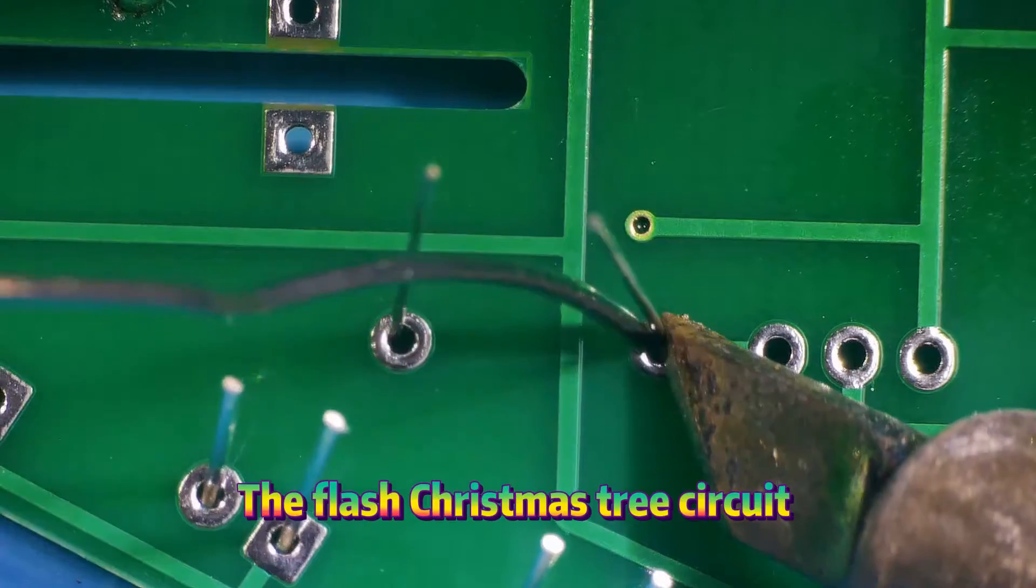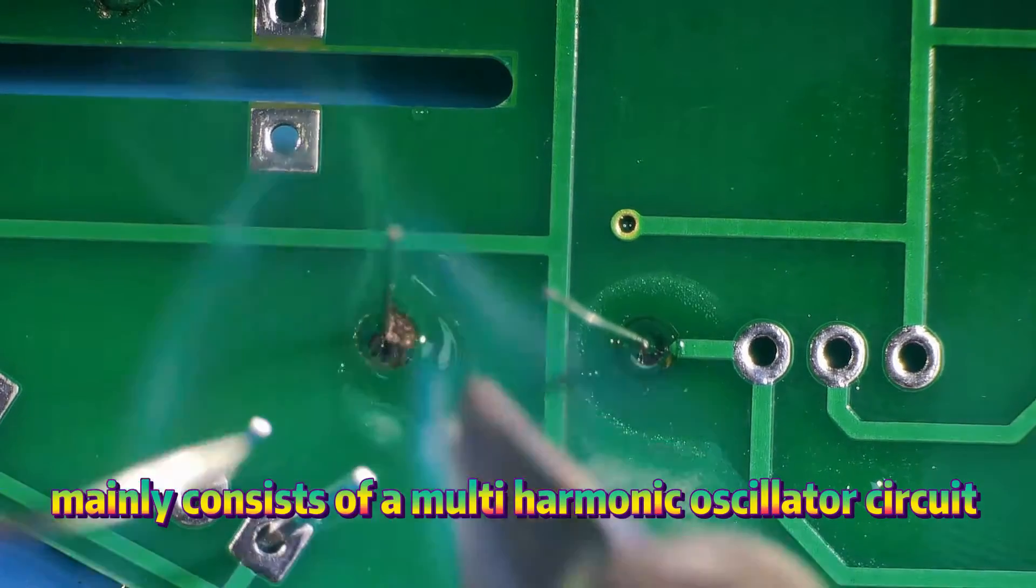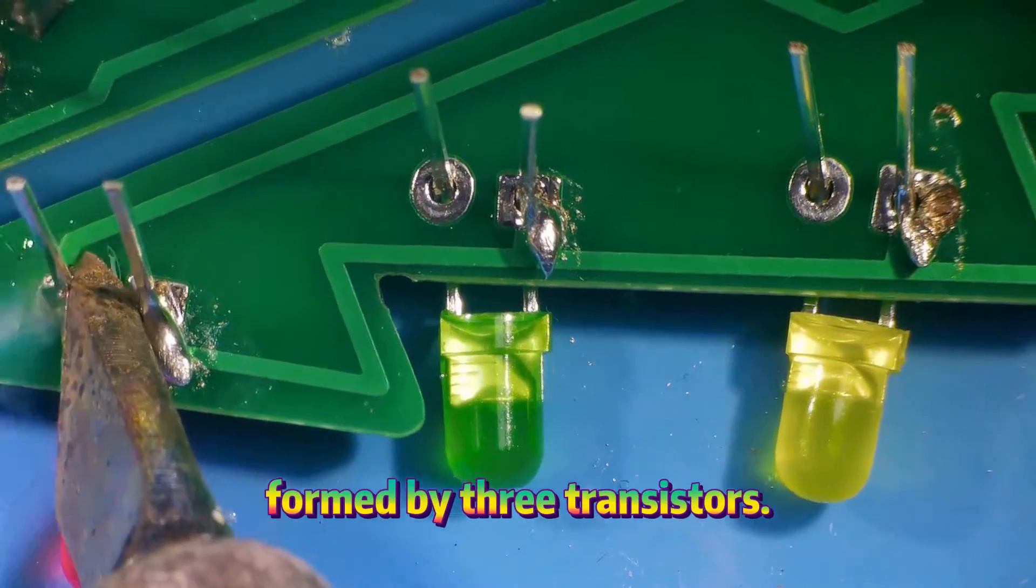The flashing Christmas tree circuit mainly consists of a multi-harmonic oscillator circuit formed by three transistors.